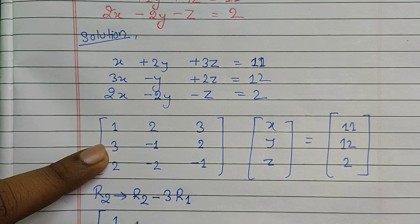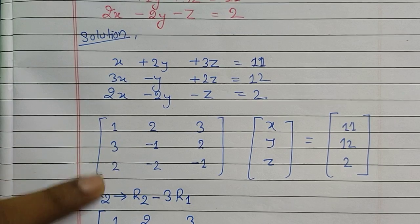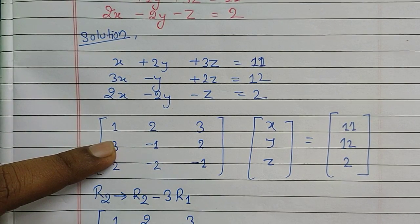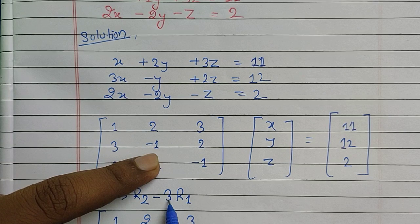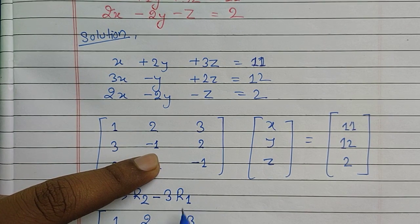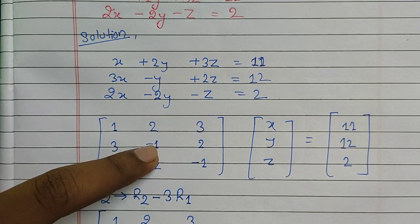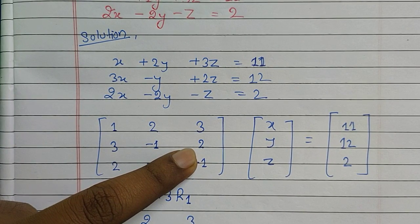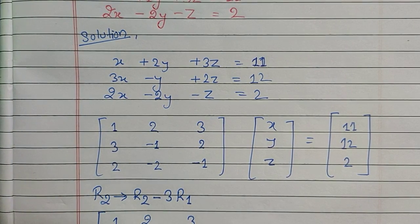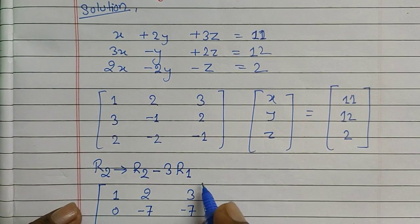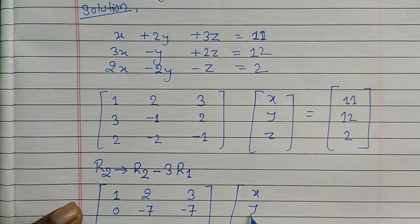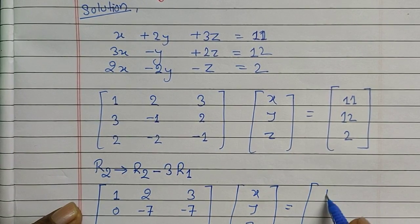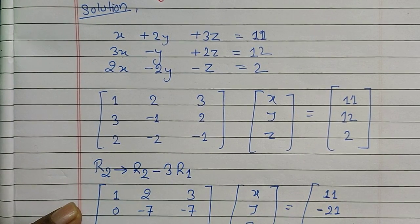Since we are not doing any operation on the first row, it remains as [1, 2, 3 | 11]. Applying R2 minus 3R1: 3 minus 3×1 gives 0; minus 1 minus 3×2 gives minus 7; 2 minus 3×3 gives minus 7. On the right-hand side, 12 minus 3×11 gives minus 21. So R2 becomes [0, -7, -7 | -21].